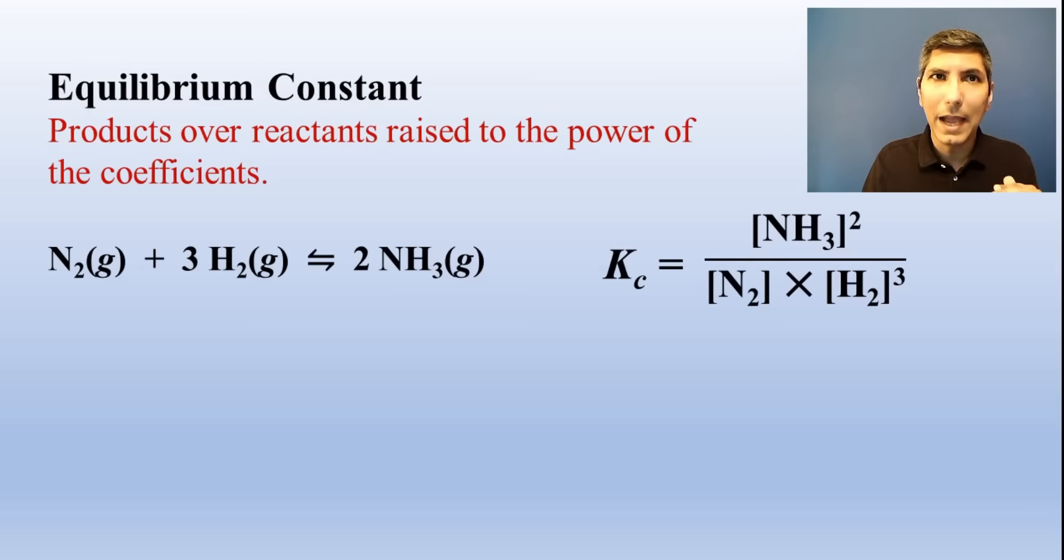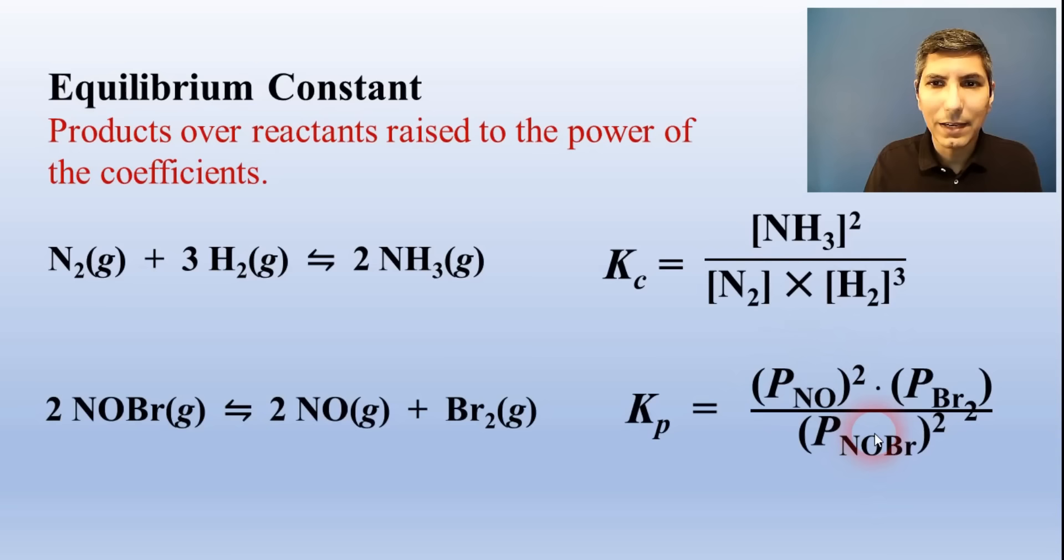We write the equilibrium constant expression for any reaction by making the equilibrium constant, Kc, equal to the concentration of the products over the reactants, all raised to the power of the coefficients, just like we see in this example. For Kp, it's the partial pressure of the products over the reactants raised to the power of the coefficients. In all cases, we leave out any solids or pure liquids from equilibrium calculations.